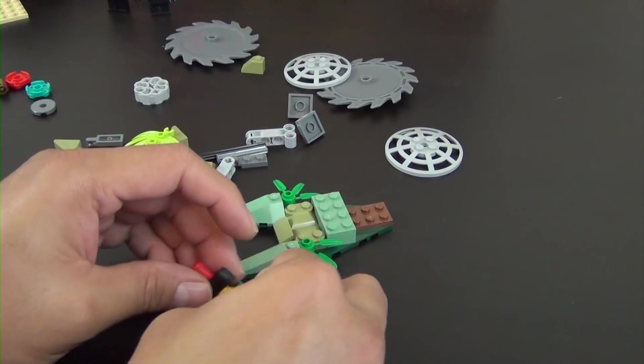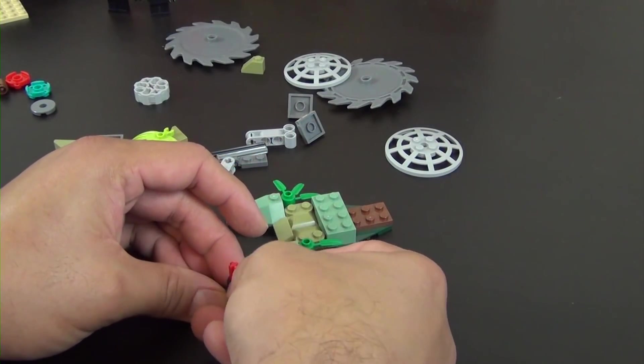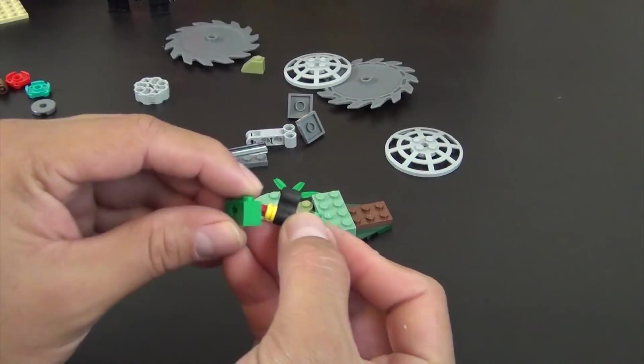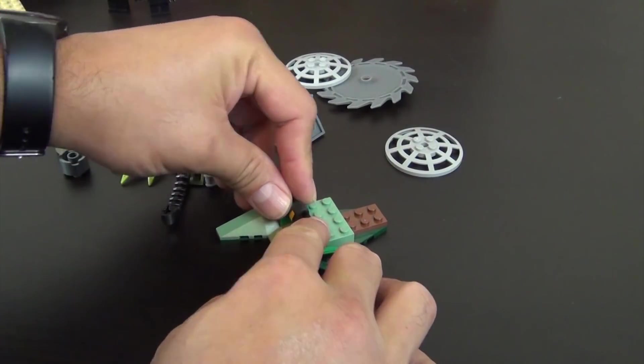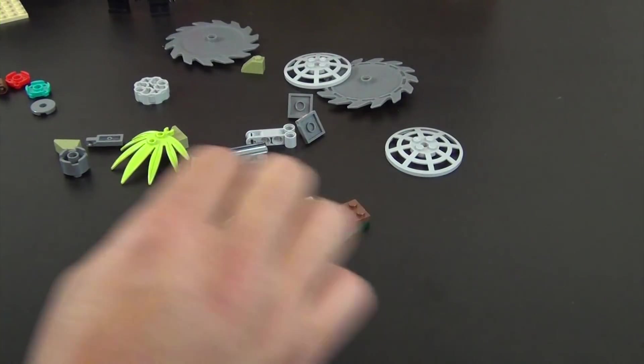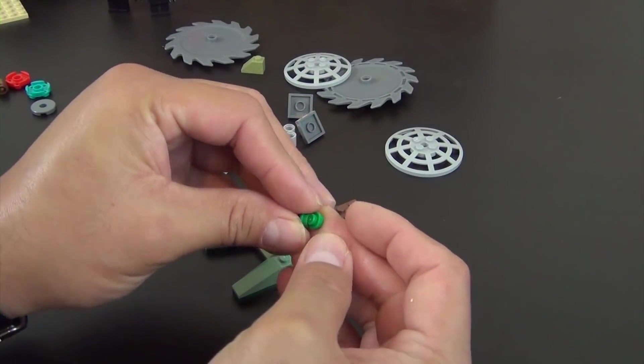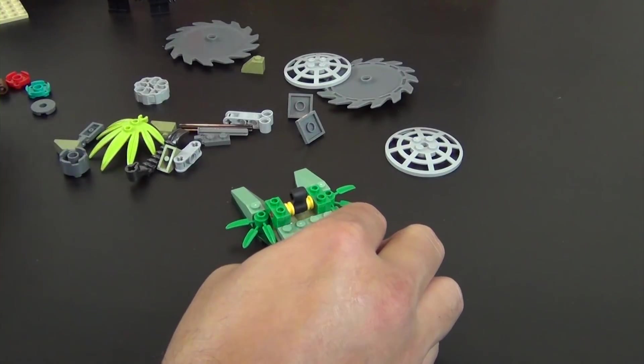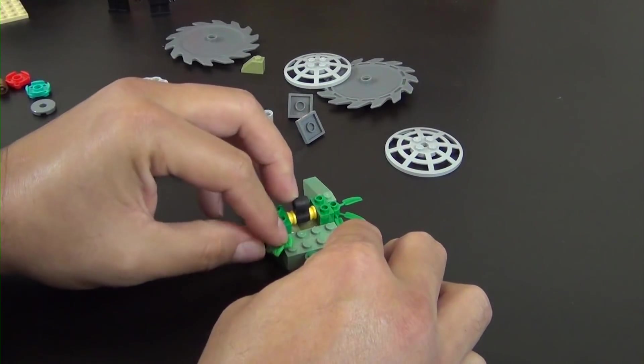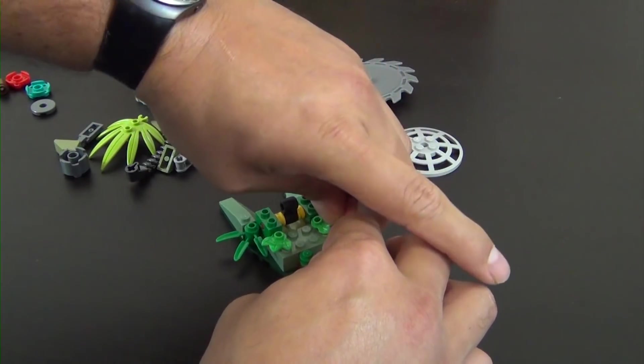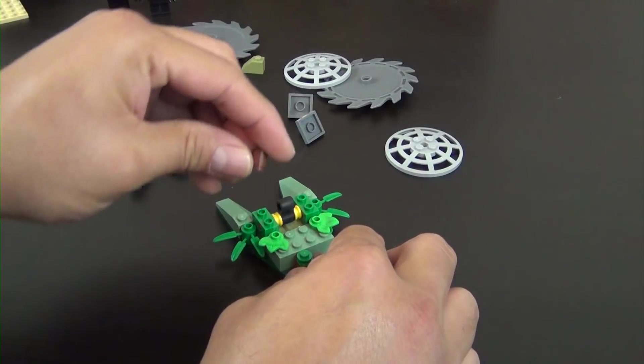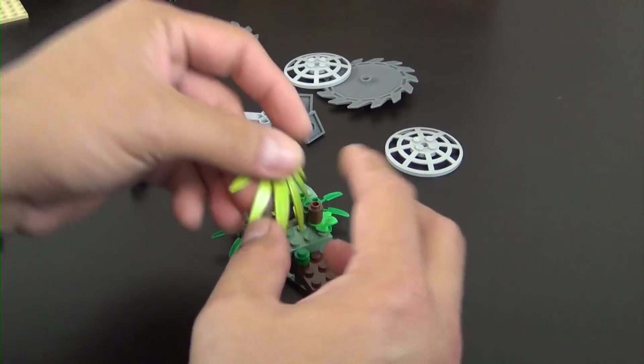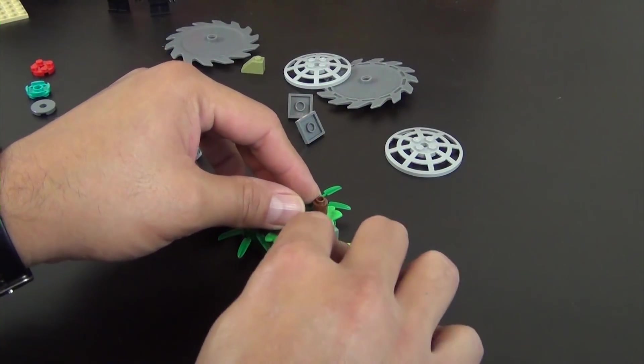We'll slide a few technic pieces on here. That'll go right there in the middle. Two green studs. And two of these leaf pieces which we saw a lot of in the Jurassic World sets. So we're getting those in other sets as well. Add this palm tree leaf.